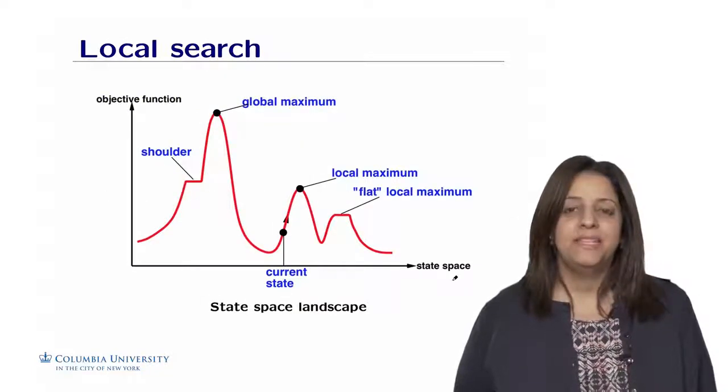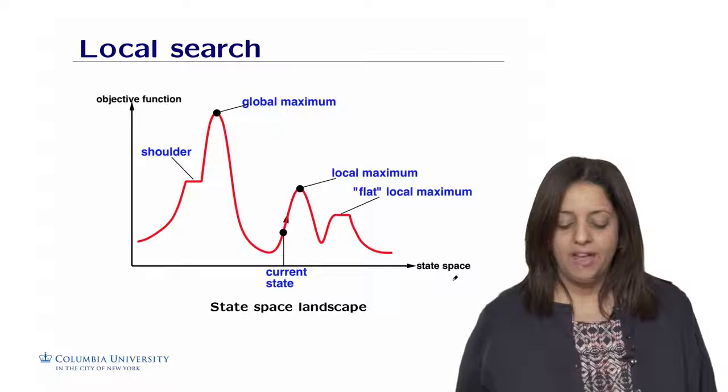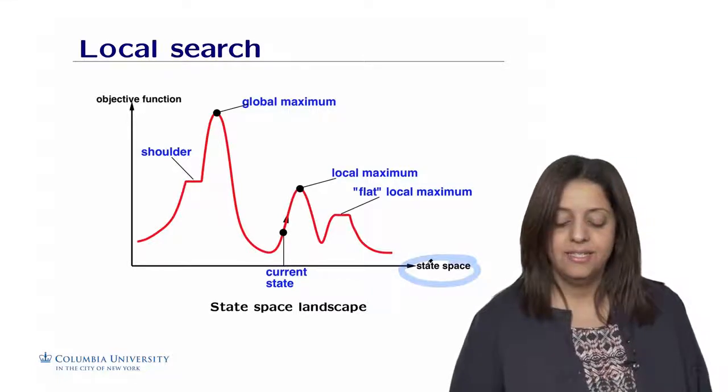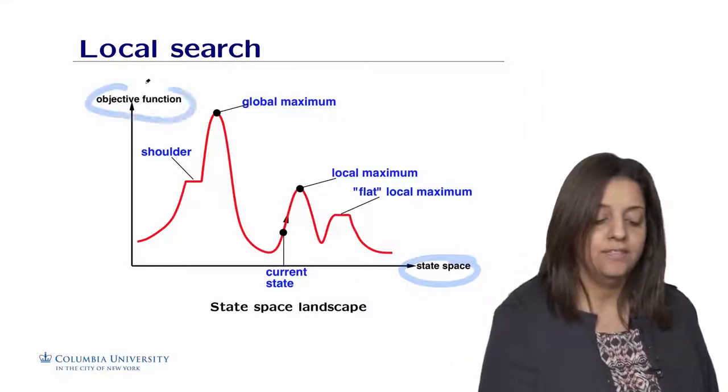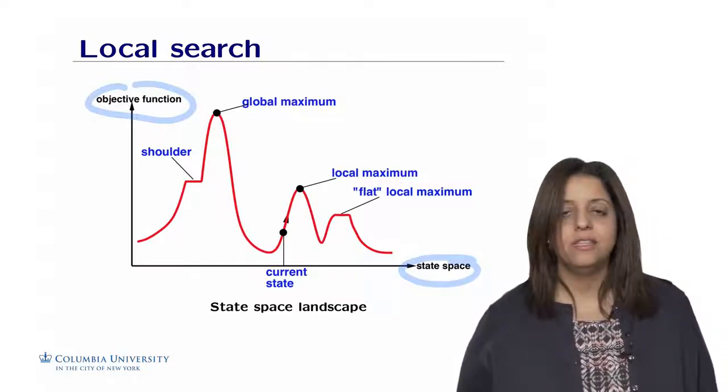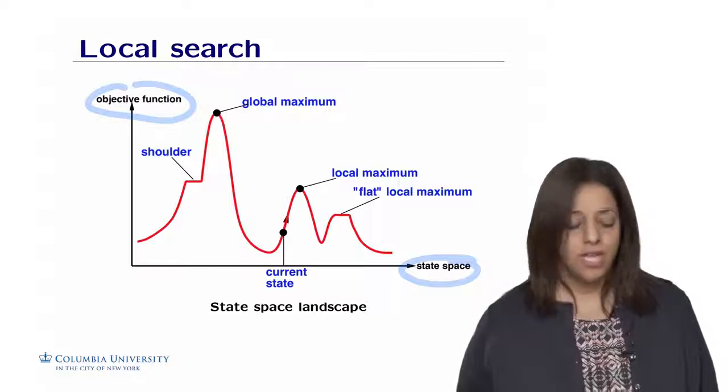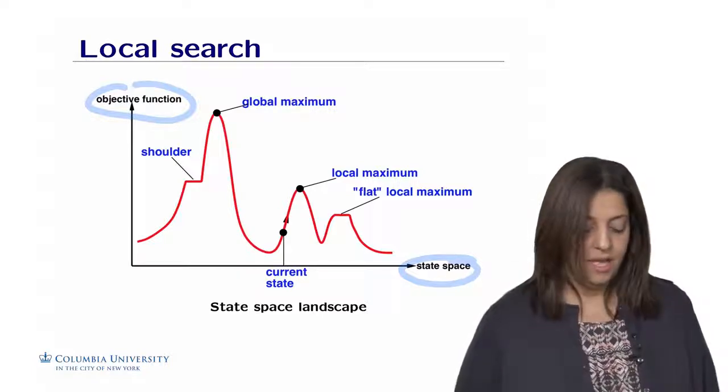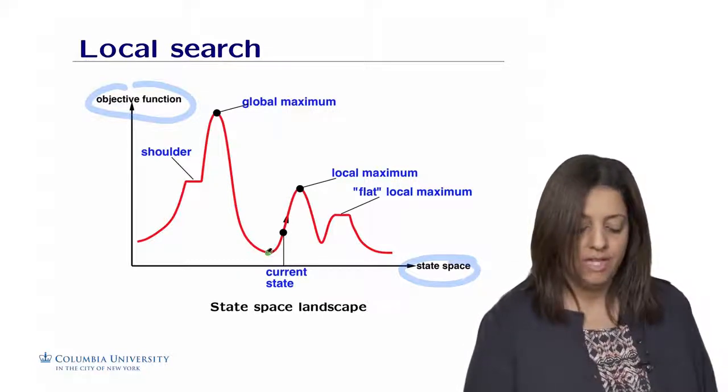Let's consider the state-space landscape for local search, on which we have on the x-axis the states and on the y-axis the objective function. If the function on the y-axis is the cost, then the goal of the search is to find the lowest valley, or the global minimum, for that function.